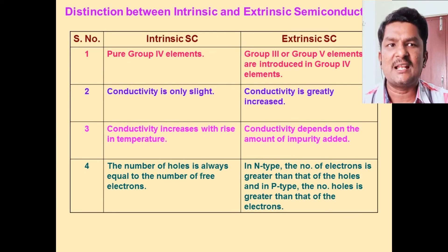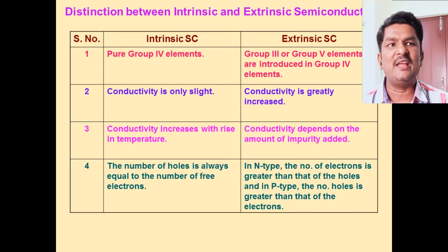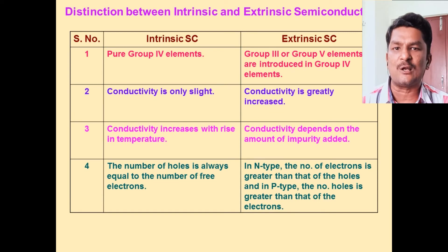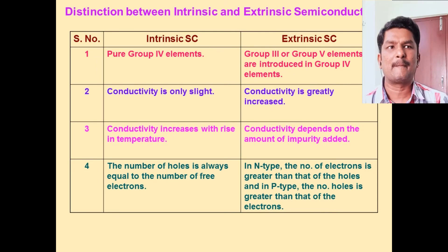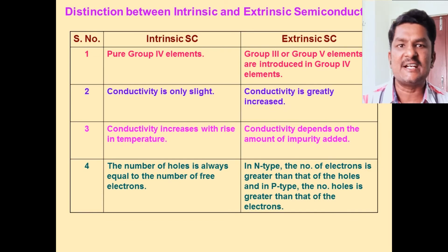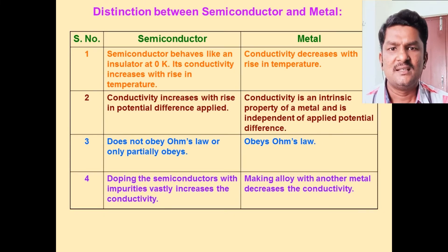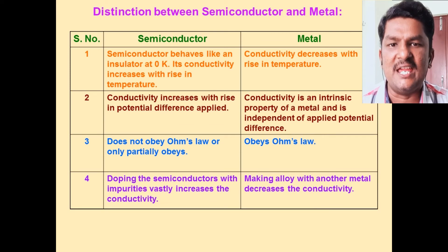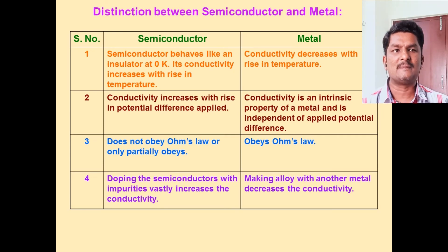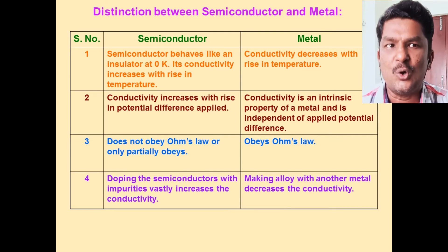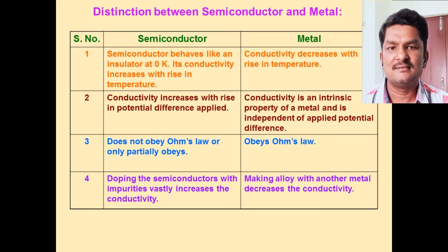In an intrinsic semiconductor, the number of holes is always equal to the number of electrons. But in an extrinsic semiconductor, it varies. In an N-type semiconductor, the number of electrons is greater than the number of holes. Conductivity is greatly increased in the case of extrinsic semiconductors, meaning impure semiconductors. Doping semiconductors with impurities increases the conductivity — that is the important concept.